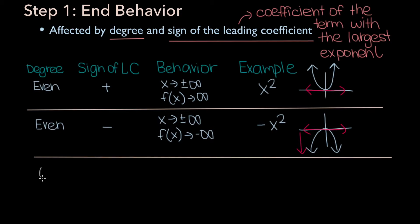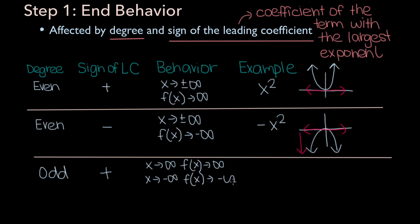Now let's consider our third scenario where the degree of the polynomial is odd and the sign of the leading coefficient is positive. For this type of polynomial, as x approaches infinity, f of x will approach infinity, and as x approaches negative infinity, f of x will approach negative infinity. An example is x cubed — the degree is odd, the leading coefficient is positive 1, and if we graph x cubed, it looks something like this.